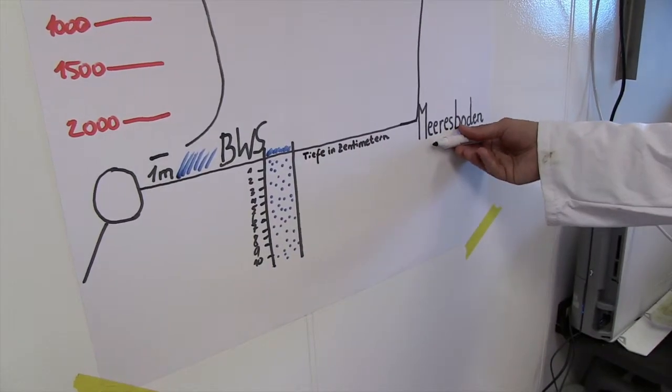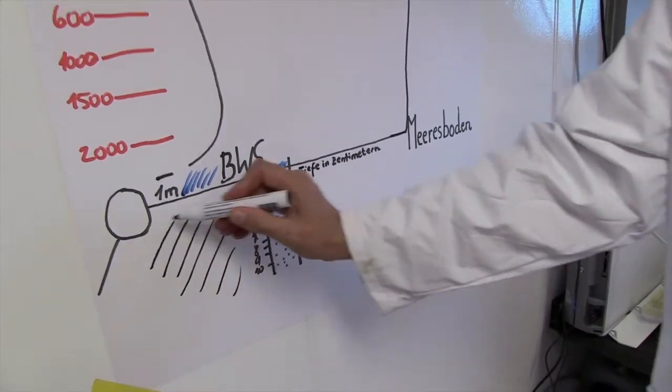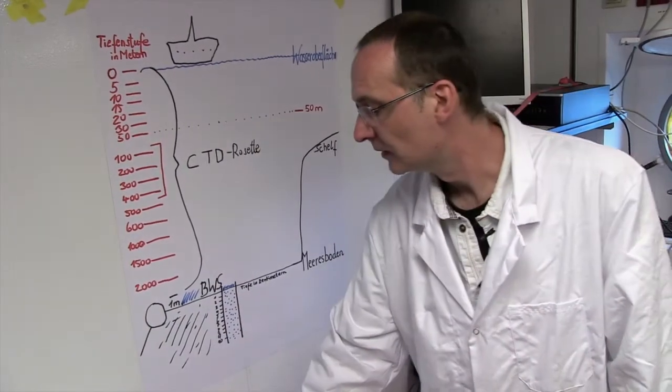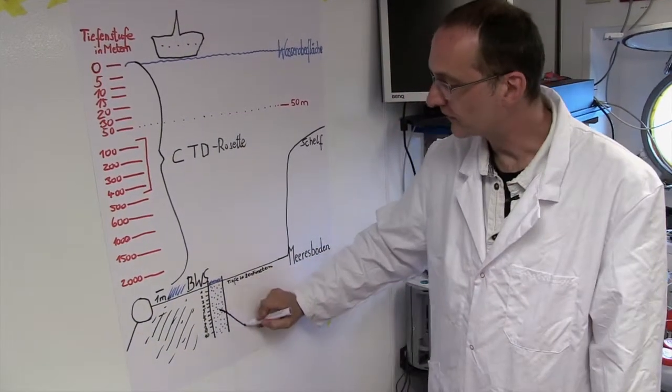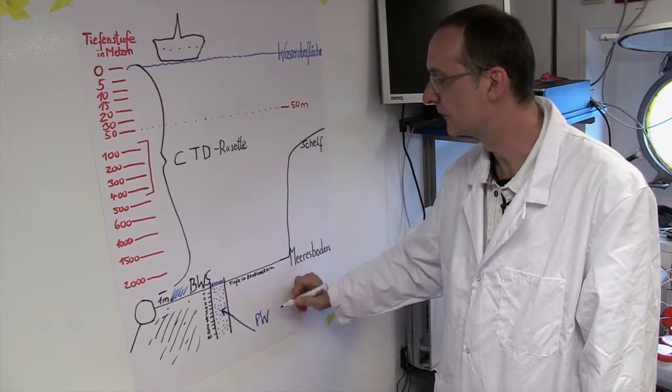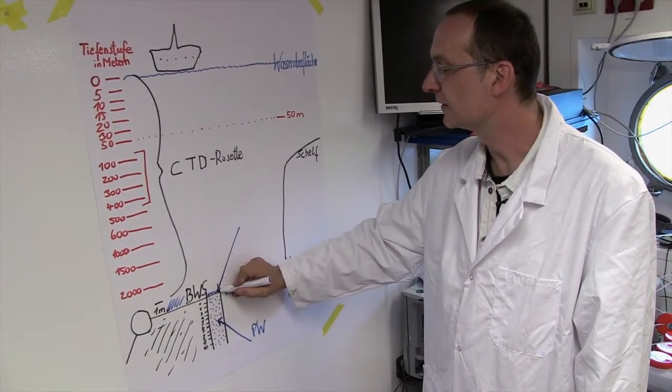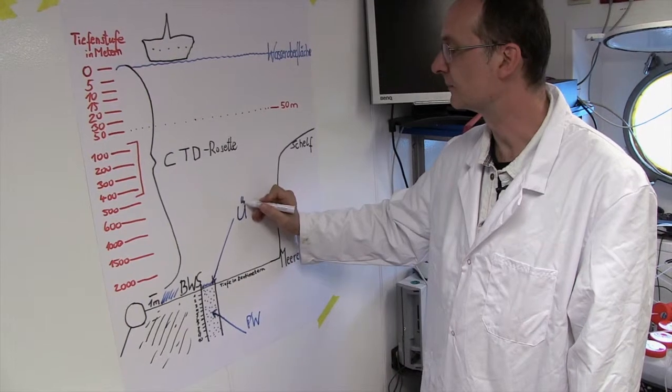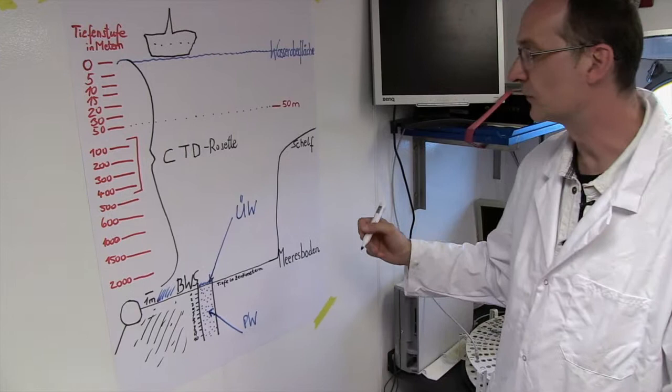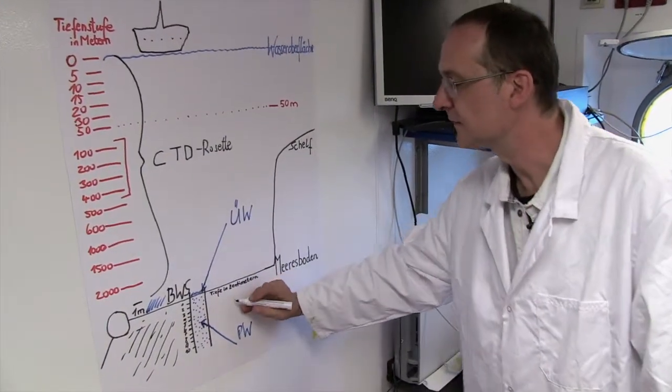Now all that's missing is the seabed. The seabed consists of marine sediment and particles loosely bound to each other, which contain pore water. Just above the seabed we have the supernatant water. In order to collect the supernatant water and the pore water, we need a special instrument, the multicorer.